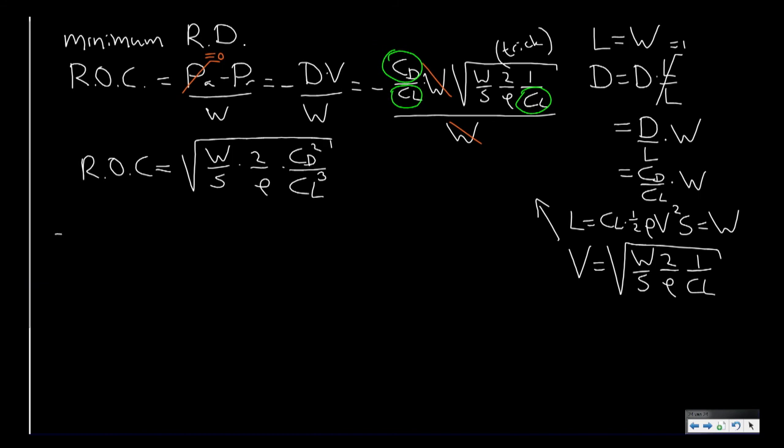So this means that in order to get maximum rate of climb, or in other words minimum rate of descent, we should have maximum CL to the power 3 divided by CD squared. Because of course the aircraft weight is constant, the wing surface area is constant, 2 is a constant term, and we are actually looking at flight at one specific altitude at one point in time. So we need to maximize this relation.